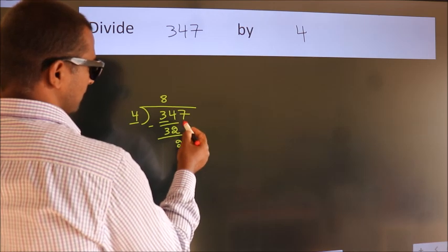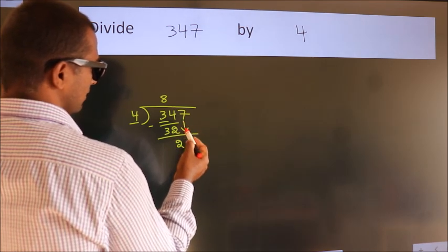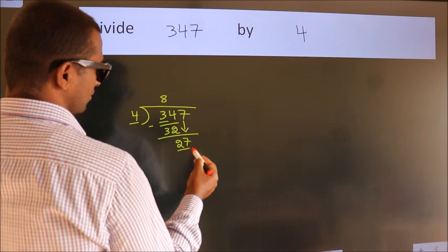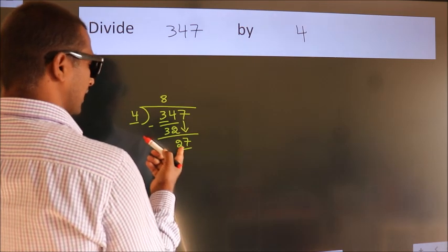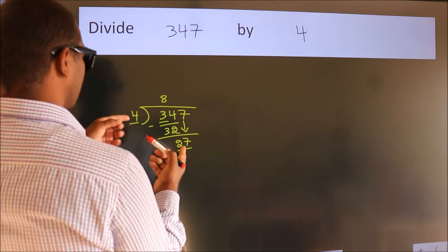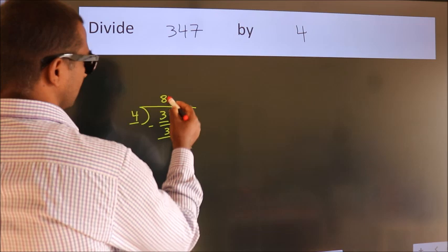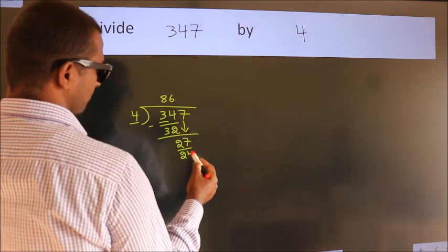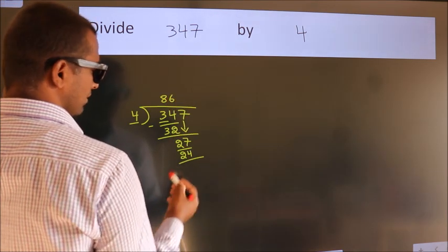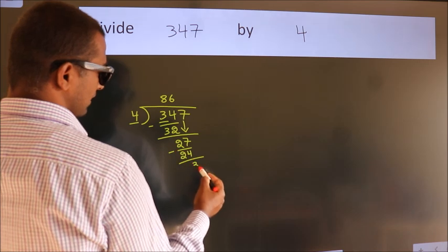After this, bring down the beside number. So, 7 down. So, 27. A number close to 27 in the 4 table is 4 times 6, which is 24. Now we subtract and get 3.